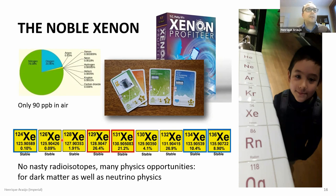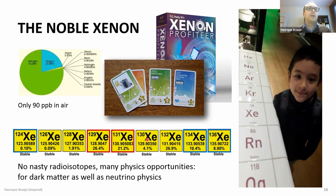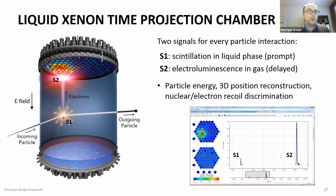Xenon has many stable isotopes, which is actually quite useful — there's a lot of physics you can do using the different isotopes in your detector, including both dark matter physics and neutrino physics. To instrument the xenon detector for very low energy interactions, you have a field cage made from teflon, a top array and bottom array of PMTs. A particle comes in and interacts with a xenon atom — either with the electrons creating an electron recoil or with the nucleus creating a nuclear recoil — depositing a small amount of energy, which produces a first flash of scintillation light called the S1.